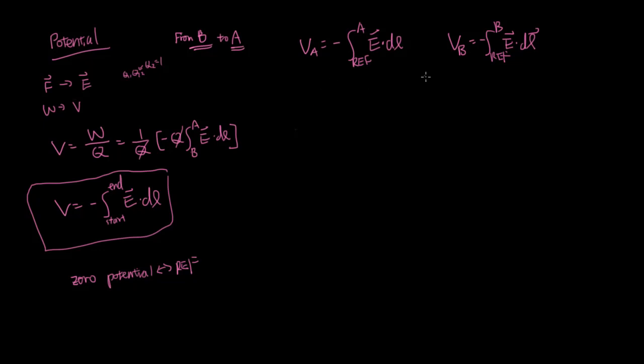And therefore, if you wanted to find the potential difference between VA and VB, which we'll just call VAB, that would be the line integral from B to A, E dot DL.